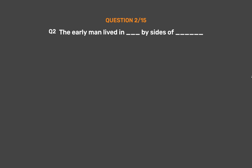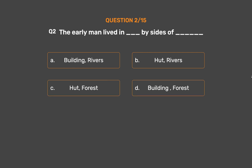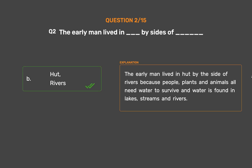Question number two. The early man lived in blank by the sides of blank. Option A - Building, Rivers; Option B - Hut, Rivers; Option C - Hut, Forest; Option D - Building, Forest. The correct answer is Option B: Hut, Rivers. The early man lived in huts by the side of rivers because people, plants and animals all need water to survive, and water is found in lakes, streams and rivers.